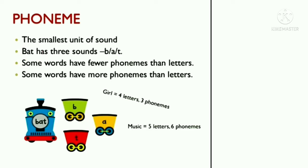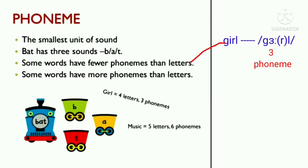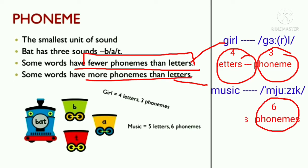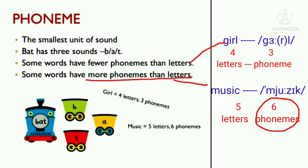Some words have fewer phonemes than letters. For example, 'girl' has three phonemes — g, r, l — but four letters. Whereas 'music' has six phonemes and five letters.